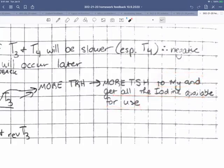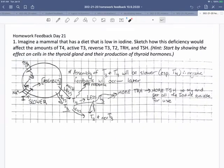And what's happening is this negative feedback system is trying to get all the iodine available for use. So that will compensate partly, but not completely because there's not enough iodine, but it will scavenge more of the iodine that is available.